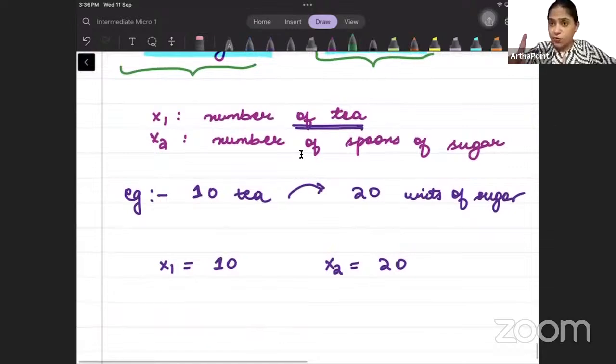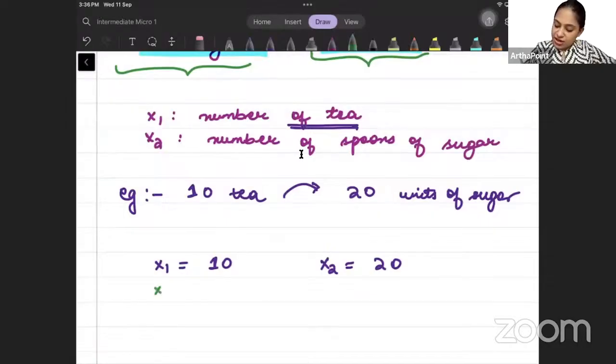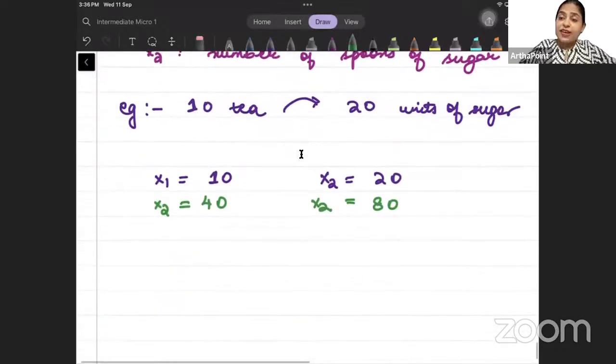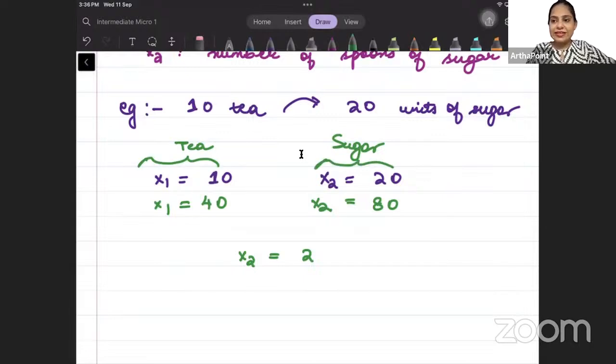Sugar is twice tea. Listen to me very carefully. It is very difficult to understand this thing. So when there is 10 tea, I need 20 sugar. Suppose I tell you that I am making 40 tea. Then how much sugar? Double sugar? Right? So you will need 80 units of sugar. If I were to write this, I can say that x2 is equal to 2 times x1. x2 is 2 times x1.